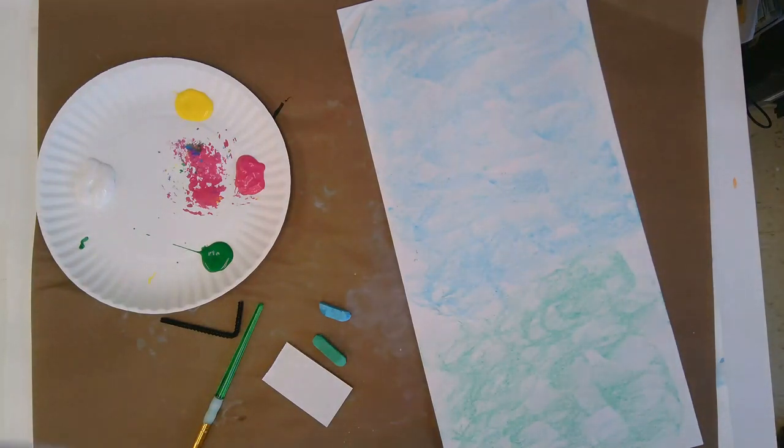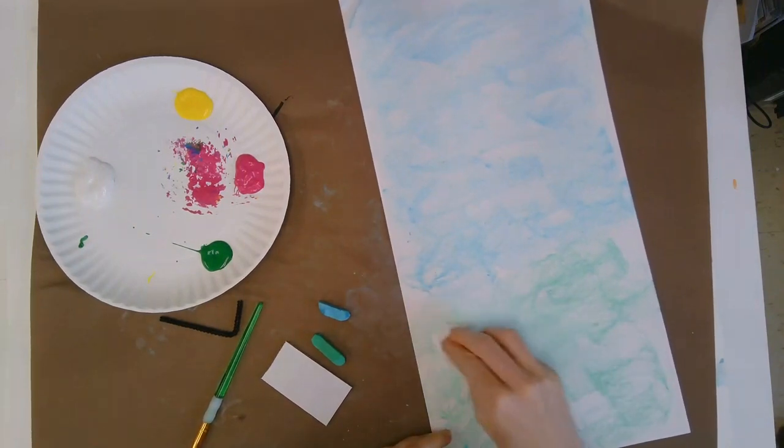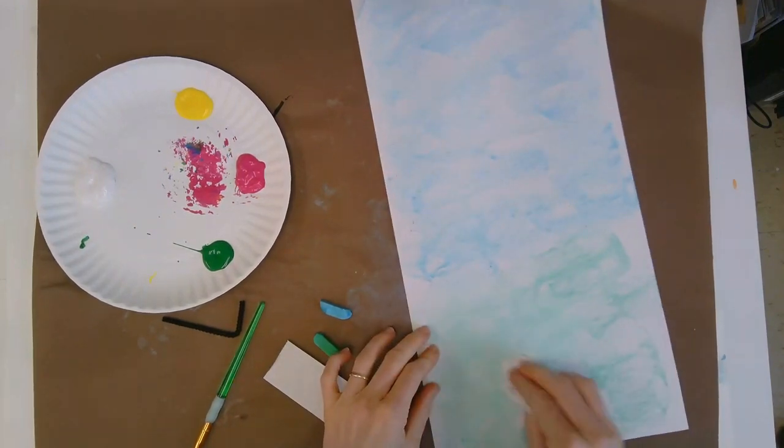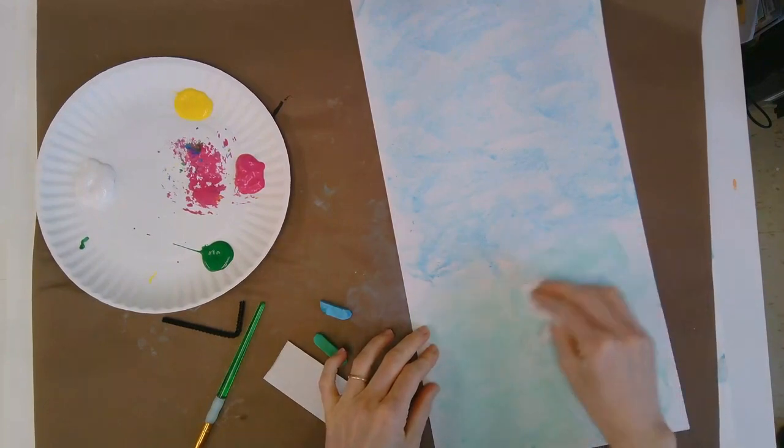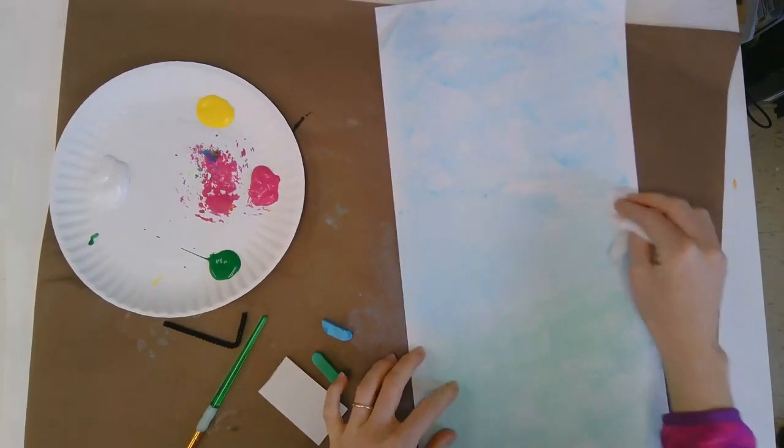And now I'm actually grabbing a tissue over here. And instead of using my hands, I'm going to take all this chalk dust that I've spread everywhere and I'm going to rub it in with the tissue or paper towel and it makes it look really soft and beautiful.